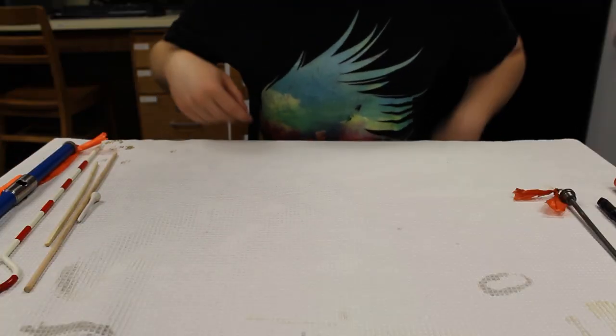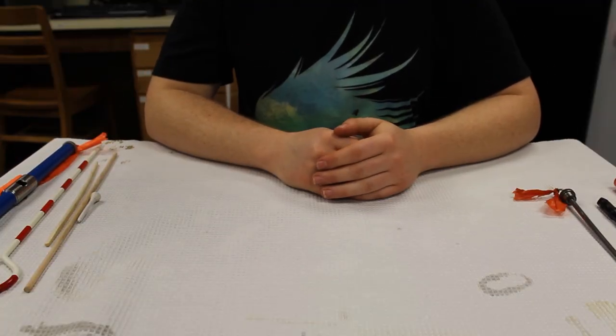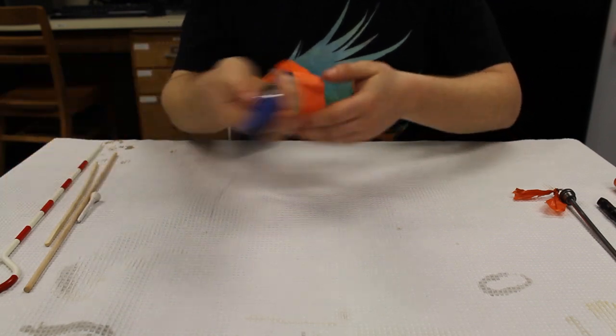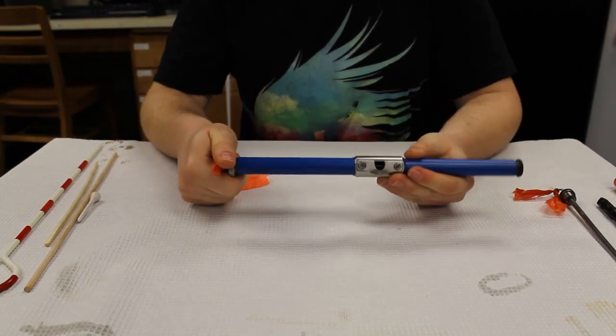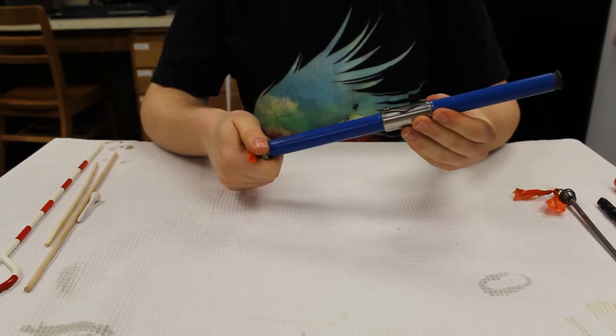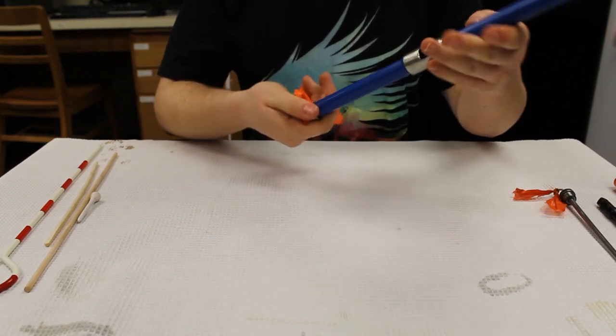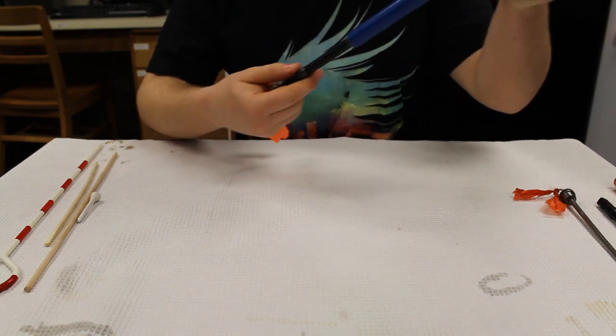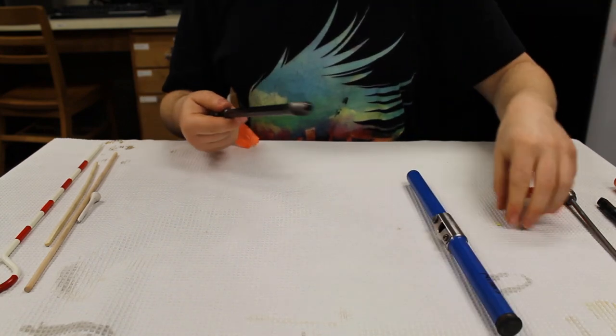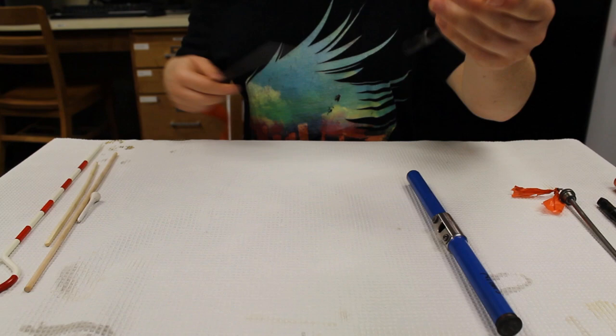Today I'll be giving a demonstration on how to properly sharpen an increment borer. An increment borer is a handheld device that is used to drill into both living and dead trees to collect a thin strip of wood we call a core. This allows you to collect a lifetime's worth of information from the tree without having to cut it down.